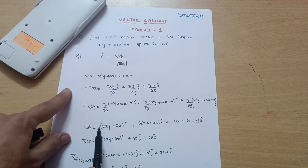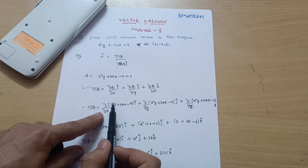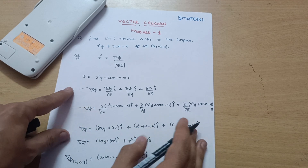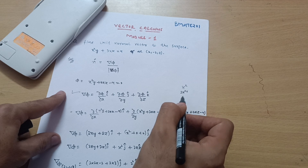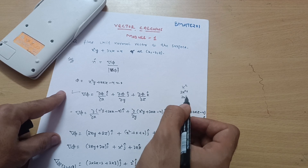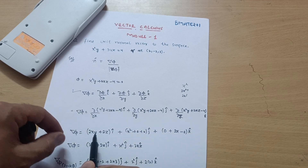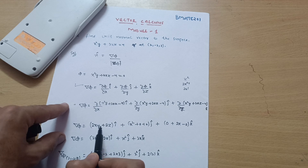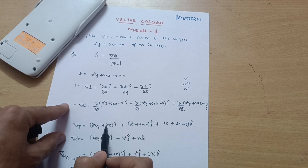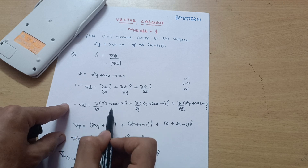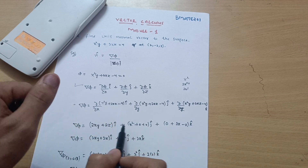Now let me differentiate this equation. We are differentiating with respect to x. The differentiation of x² is 2x — power comes down and minus 1, so 2x. And y is constant with respect to x, so keep it as is. The differentiation becomes 2xy. Here x is present; 2 is constant, so differentiation of x with respect to x is 1, giving 2z. So the i-component is (2xy + 2z) î.